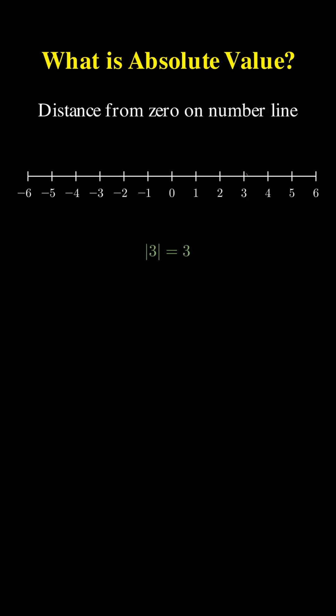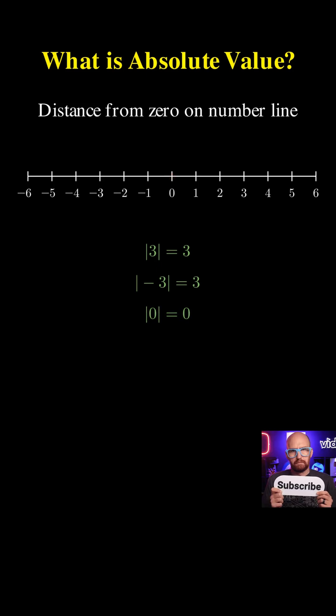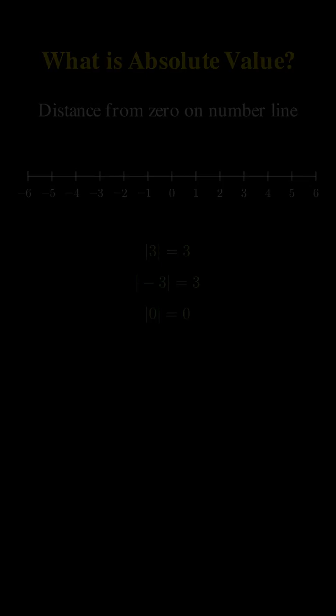First, what is absolute value? Think of it as the distance from zero. On a number line, it's always positive. For example, the absolute value of 3 equals 3, and the absolute value of negative 3 also equals 3. They're both three units away from zero. Even the absolute value of zero equals zero. This concept is key to solving our Harvard problem.